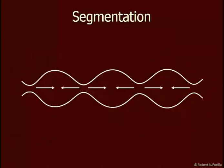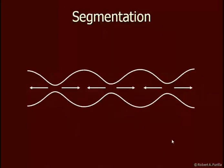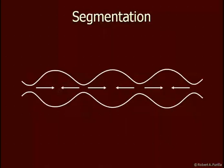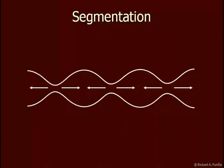Segmentation is what causes the churning of the contents of the small intestine. It does so by constricting simultaneously in several places, squeezing and pushing the fluid toward the bulge. Then this region contracts, the adjacent region bulges out, and we get this churning. This only happens a couple of times, and then peristalsis takes over again. This is a very slow process.